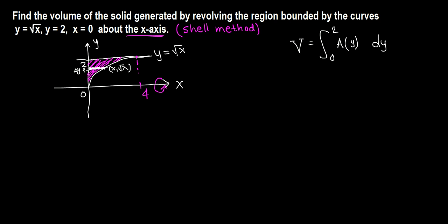So this is y equals root x. If we square both sides, we get x equals y squared. So this will be y squared, and the square root of y squared is just y. So this point is also (y squared, y).